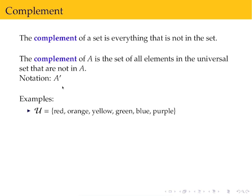Some examples of complements. So if our universe is red, orange, yellow, green, blue, purple, then if I have the set red, yellow, blue and I want to take the complement, I end up with orange, green, purple.